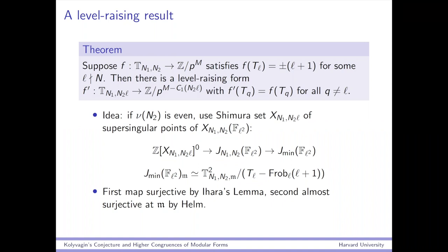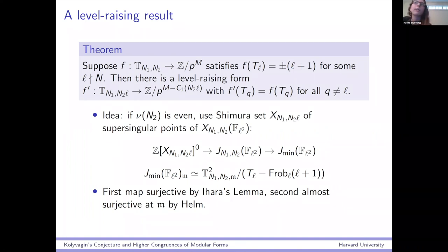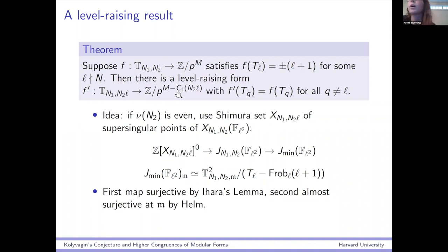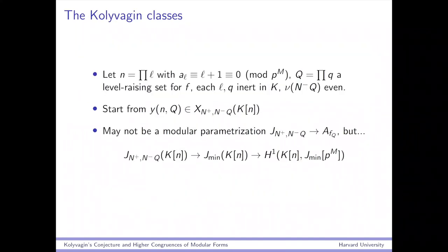Is this error actually expected in general? I would expect it to be — I don't have computational examples, but I really think it would be. Multiplicity one really does fail for these Shimura curves — that's not a limitation of what we can prove, that's a real thing.